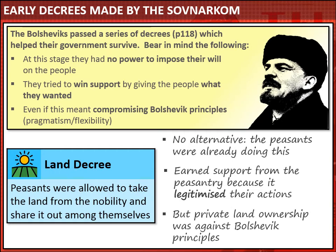A key thing worth noting here is that to deliver this promise to the peasants, the Bolsheviks had to compromise one of their key principles. As Marxists, they fundamentally disagreed with the idea of private land ownership — that was against Bolshevik principles altogether. But they were willing to compromise on that principle in order to win support from the peasants. Over the long term, Lenin and the Bolsheviks had no intention of allowing the peasants to keep this land permanently, but for short-term political gain they allowed the peasants to take it.